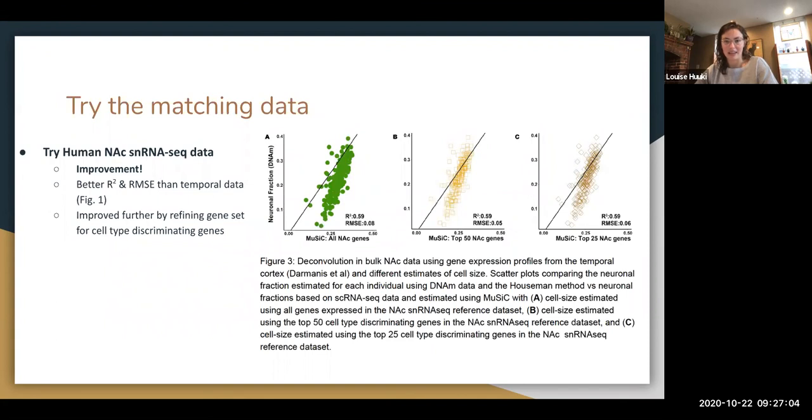So here we're trying the closest data we can get. So it's the human postmortem NAC single cell nucleus RNA-seq data. And here they said that these were the best results. We see better R squared and RMSE than the temporal data, which is back in figure one.